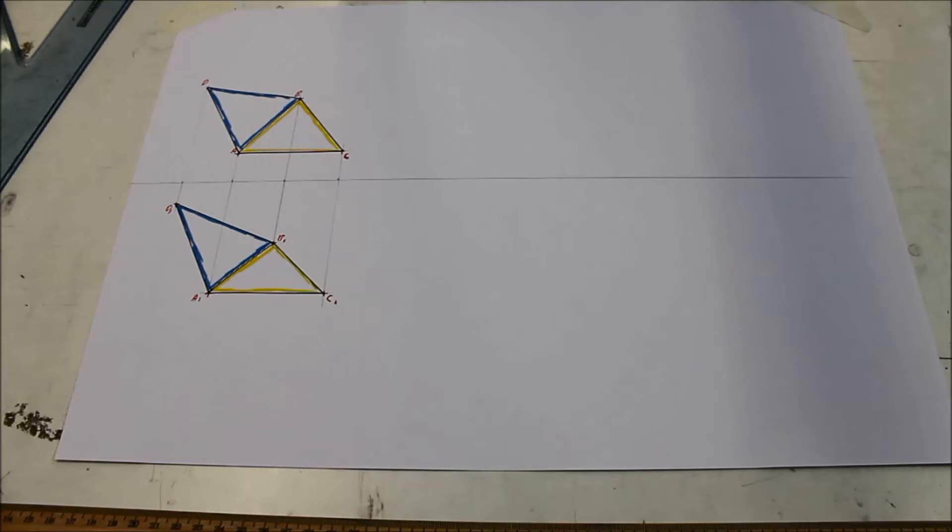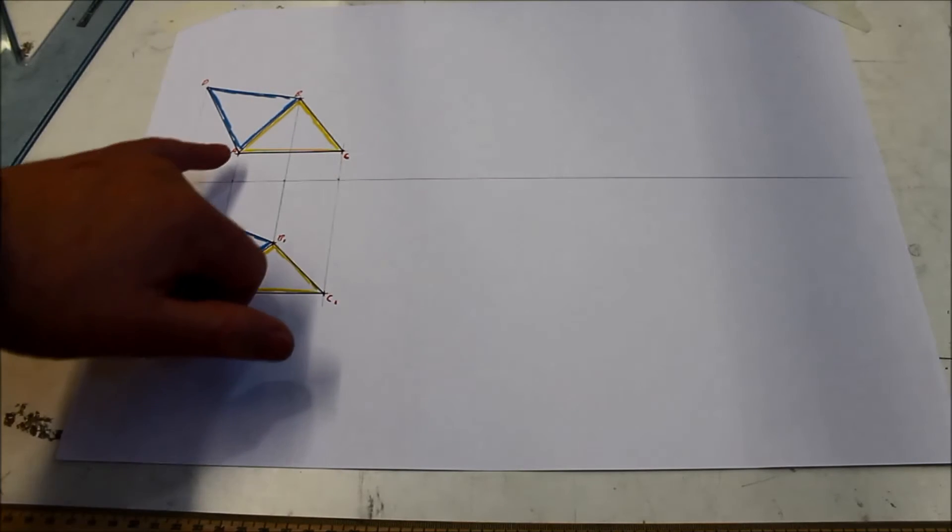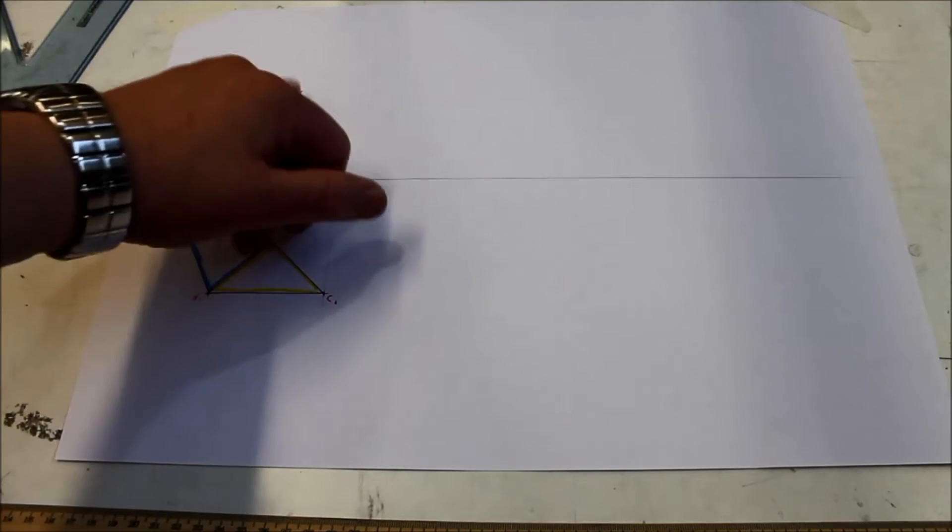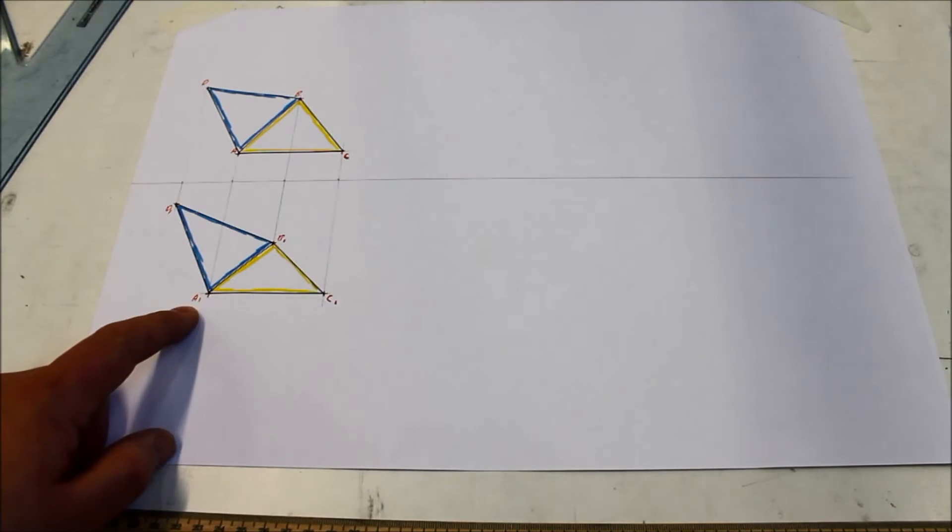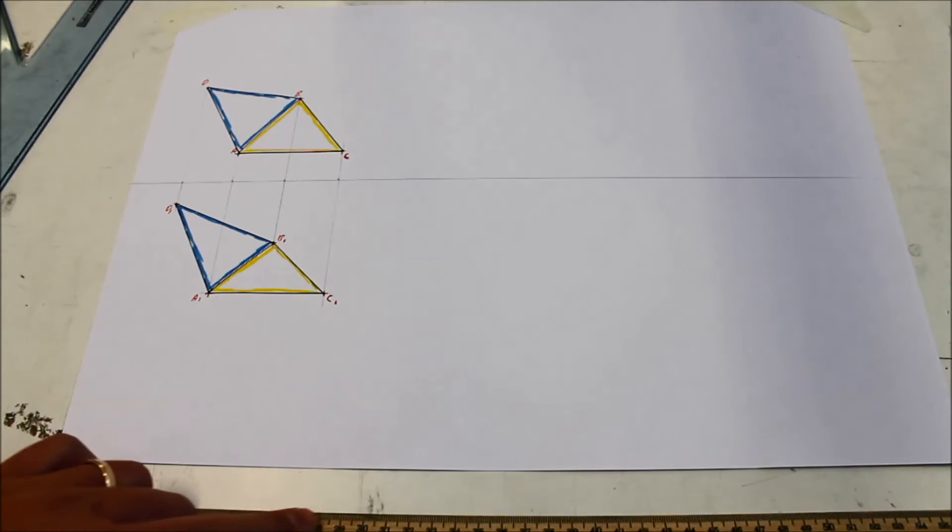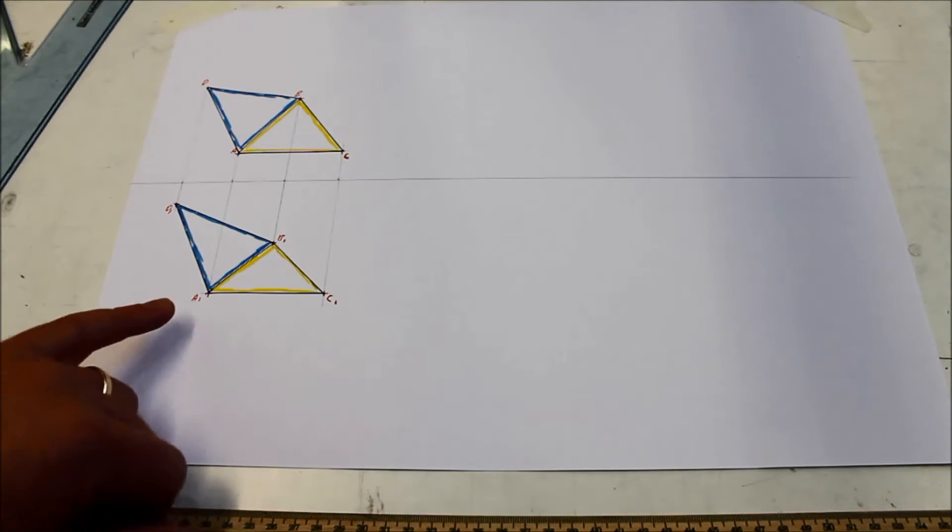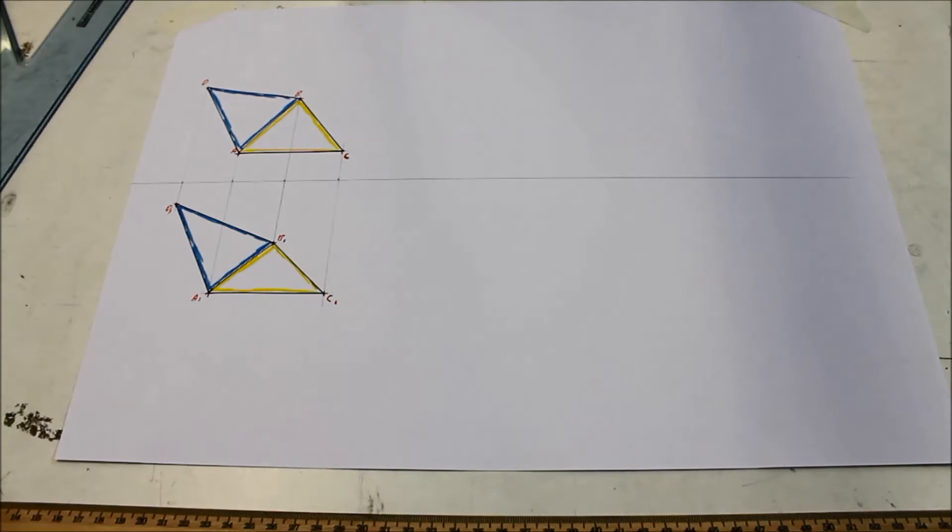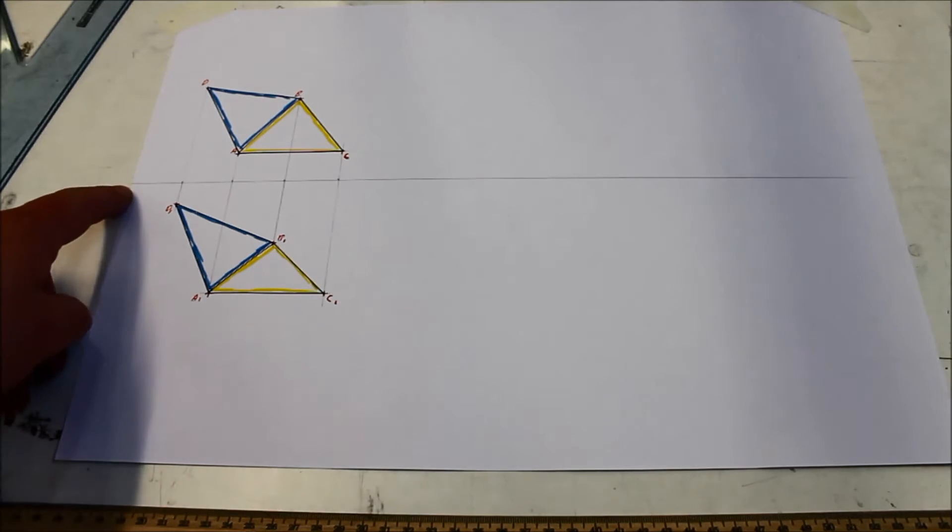Part B then: determine the dihedral angle between the planes. This is a nice question in the fact that it's a four-point question. Your line of section is the line AB, it's aligned as common to both planes. So to find the dihedral angle, let's see if it's a true length in either view, and it's not.